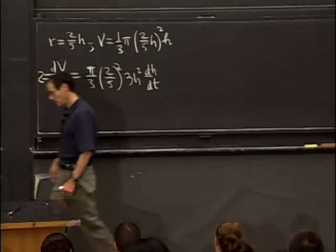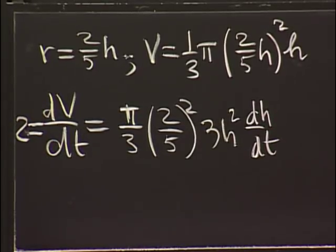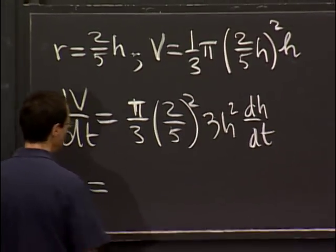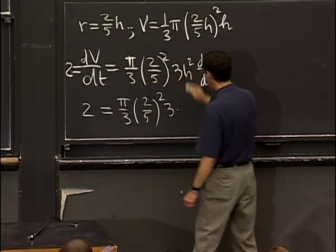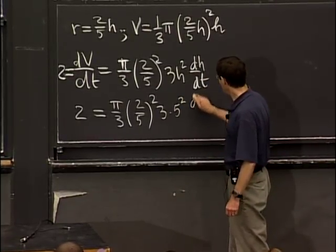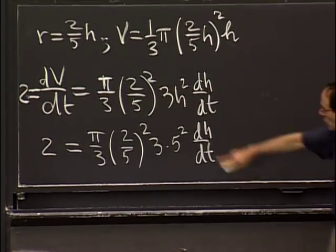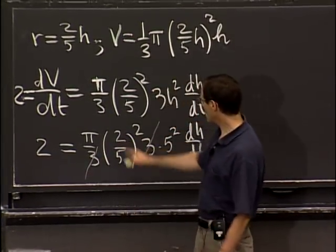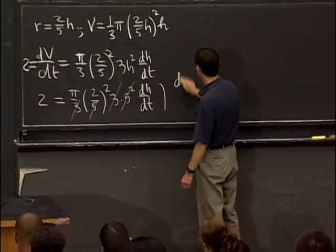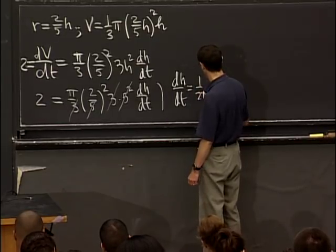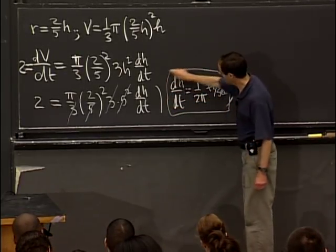Now let's plug in all the numbers. We have 2 equals pi over 3 times (2/5) squared times 3 times 5 squared times dh/dt. After doing all the cancellations, we get dh/dt equals 1 over 2pi feet per minute. That's the whole story.